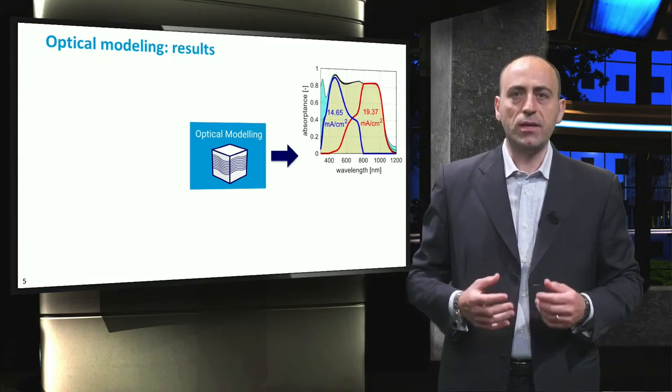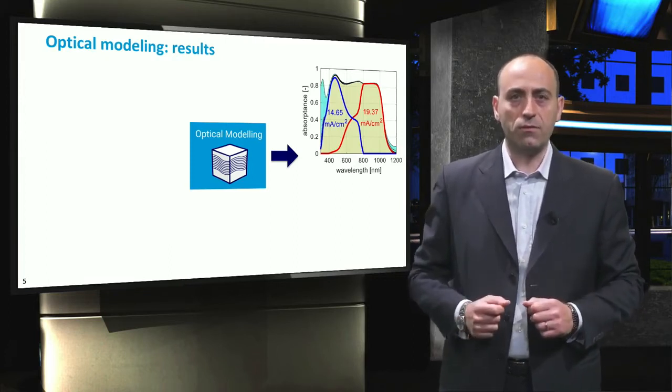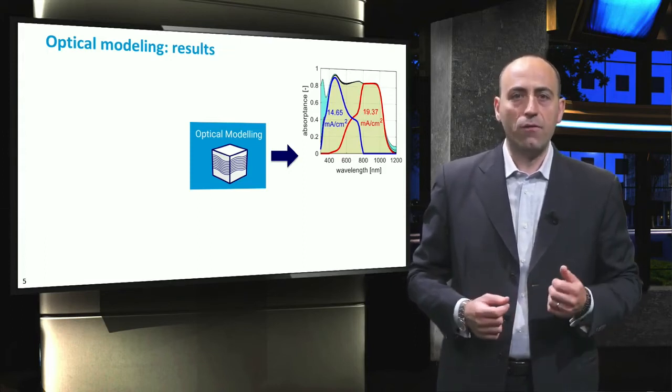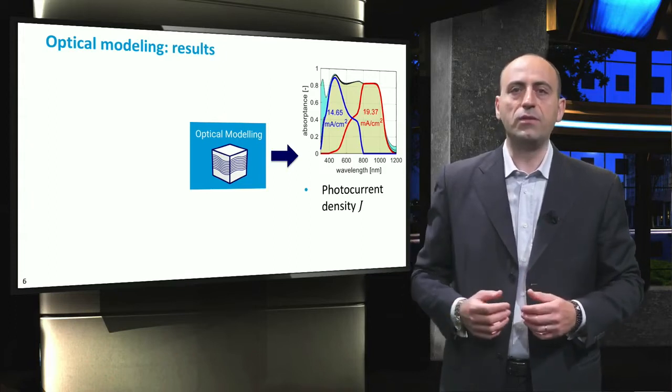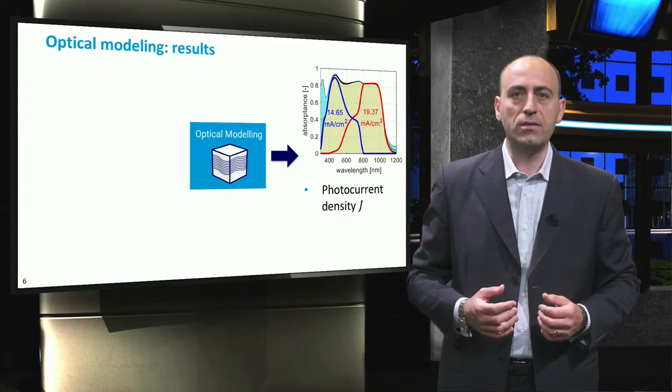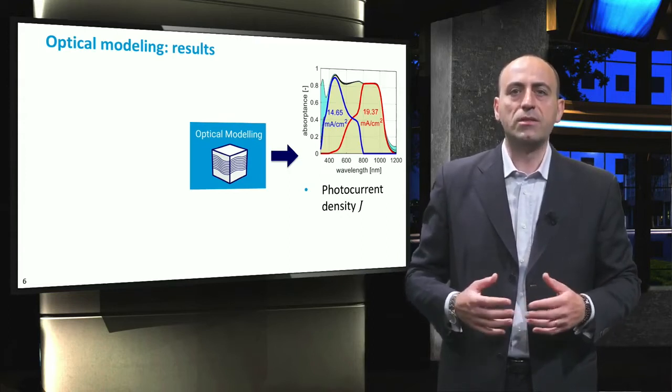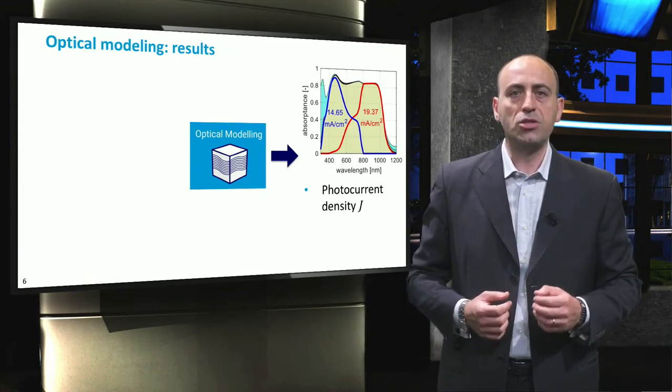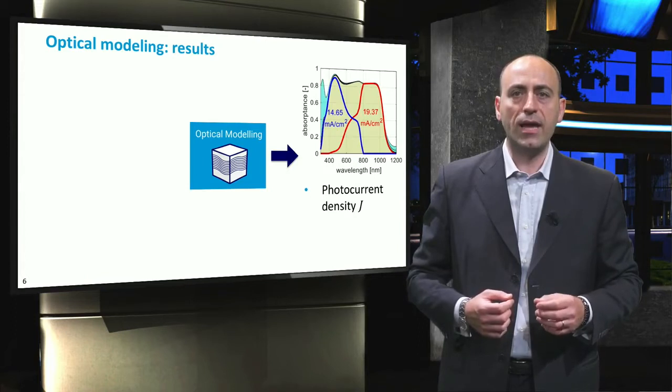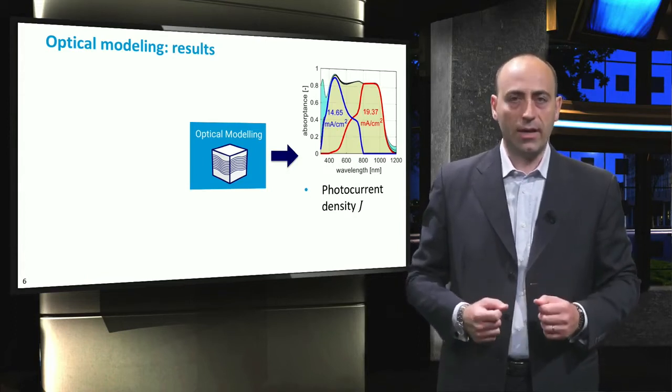In the slides, you can see the example of absorption in all layers of a tandem device or solar cell. Several quantities can be determined from the results. First, as depicted in the graph, the implied photocurrent density generated in all active layers in the device indicated with the letter J. This quantity indicates the maximum current density that can be generated in the active layers. This assumes that all absorbed photons generated a hole-electron pair and that all holes and electrons are collected.